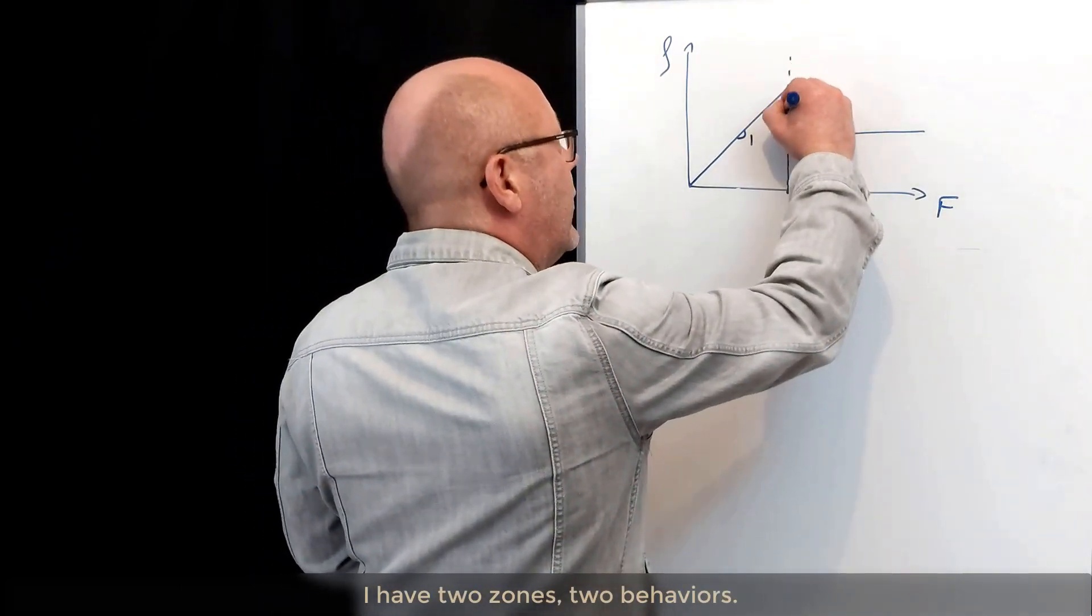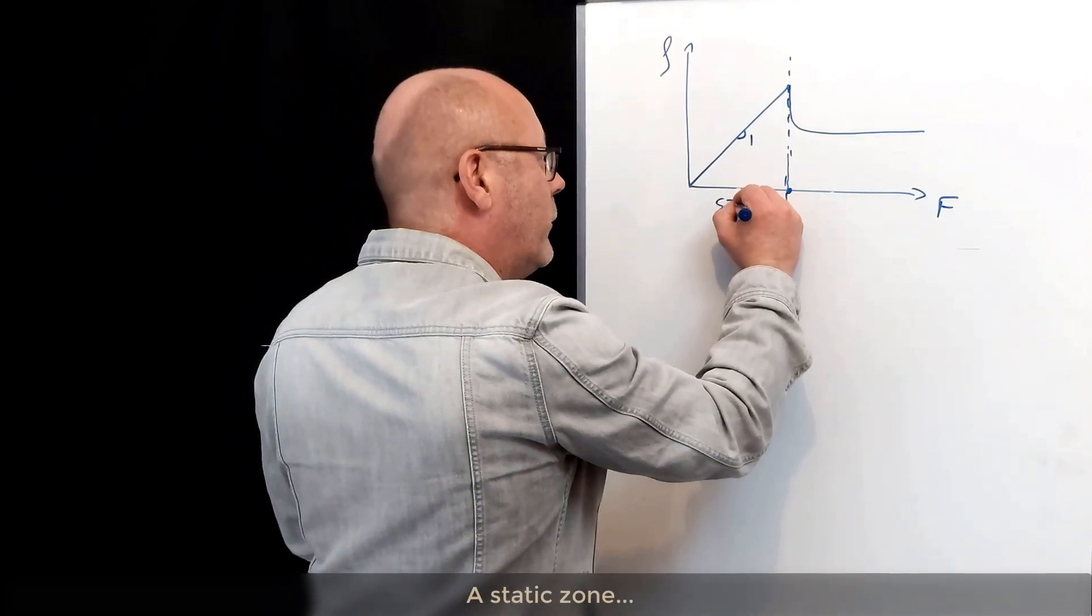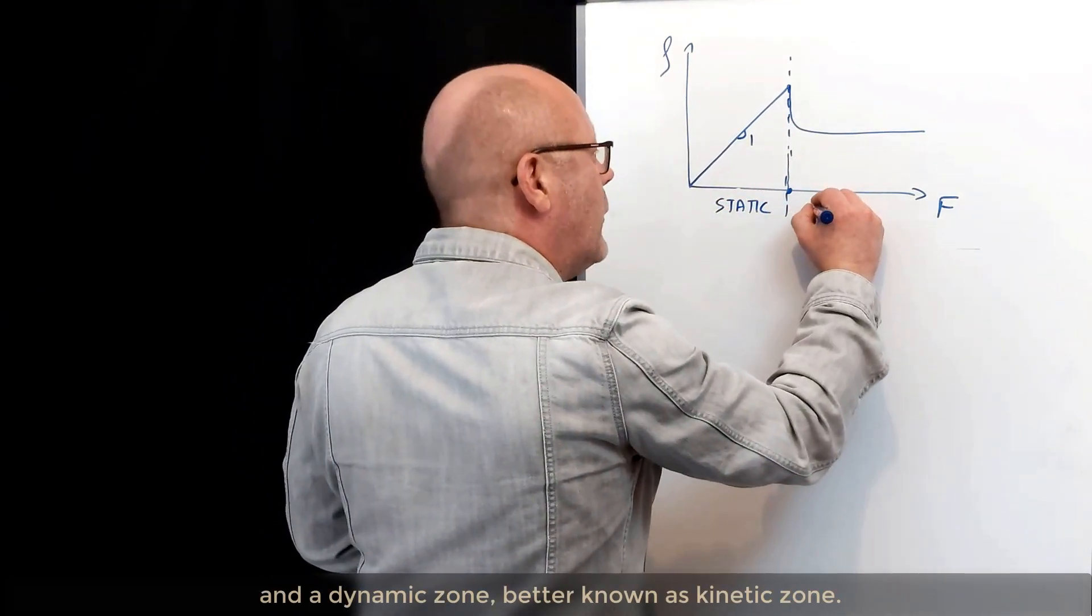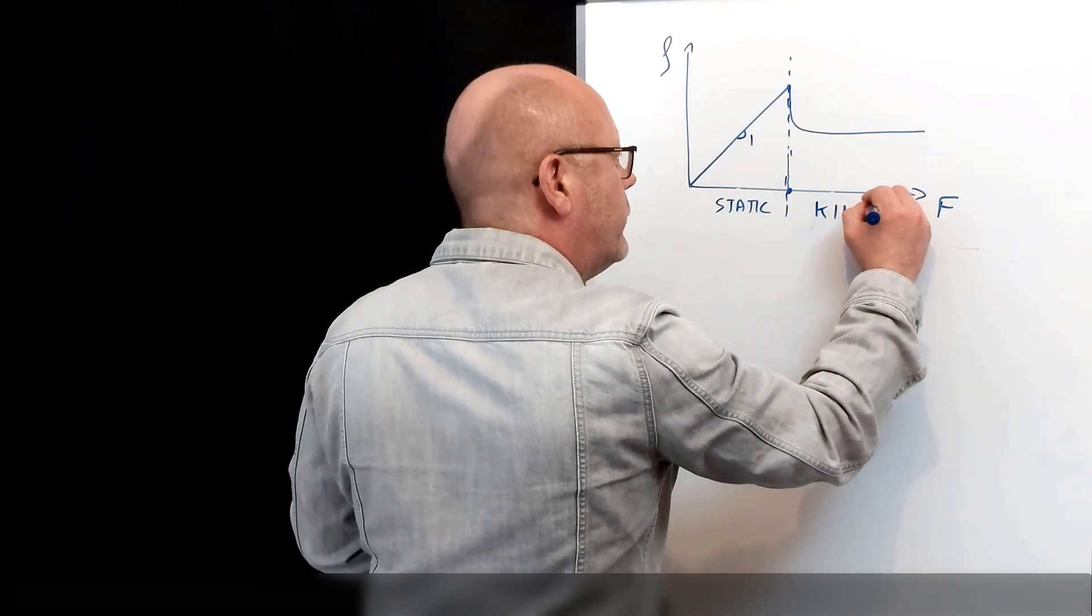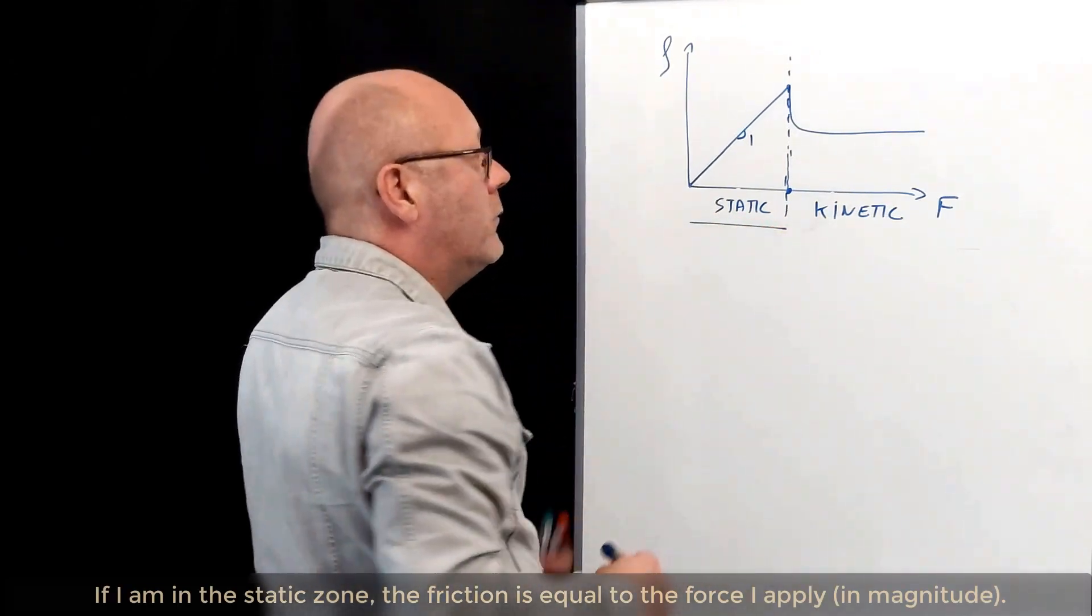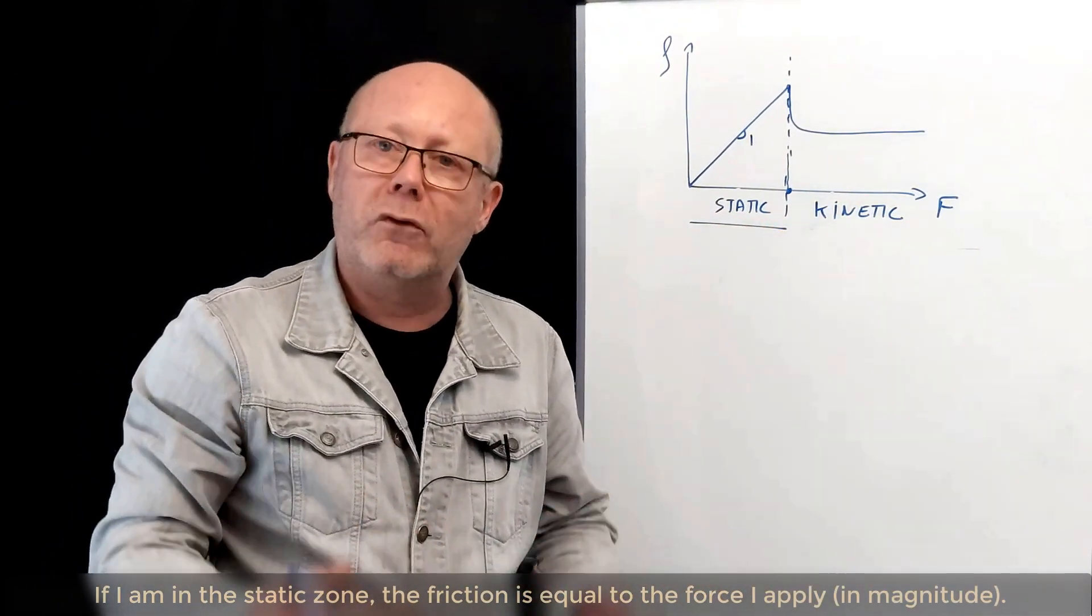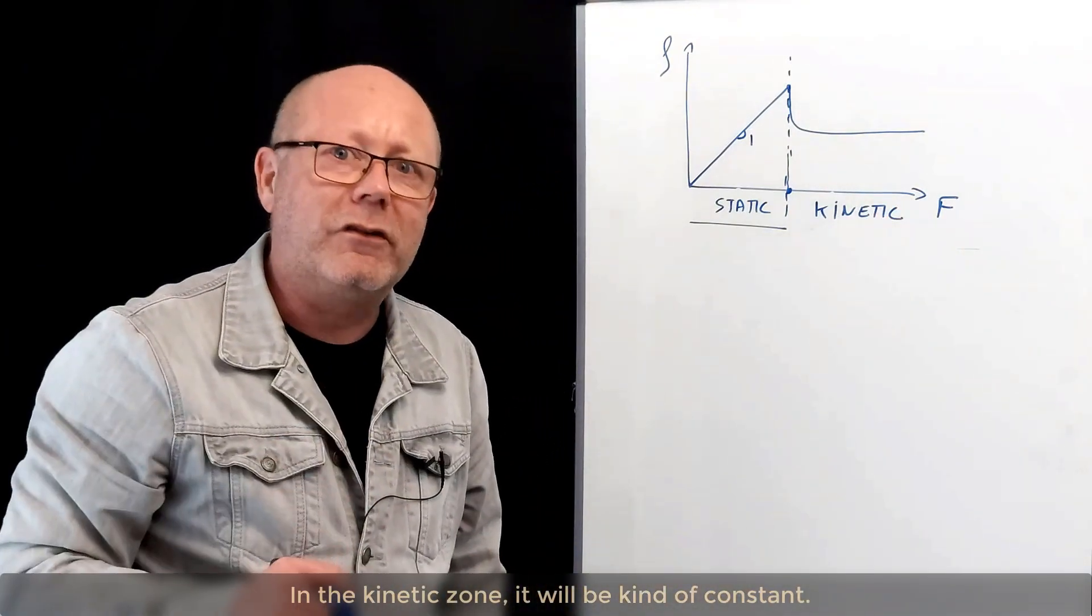I've got two zones clearly here. Two behaviors. I've got a static zone and a dynamic zone, or better known as kinetic zone. If I'm in the static zone, the friction will be equal to the force I apply in magnitude. If I'm in the kinetic zone, it will be kind of constant.